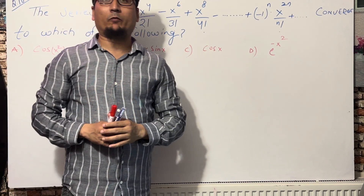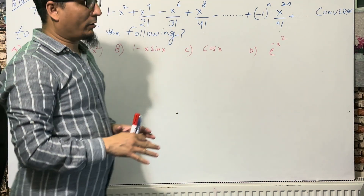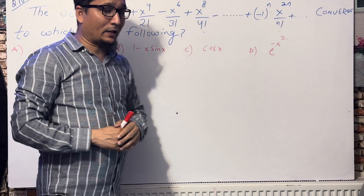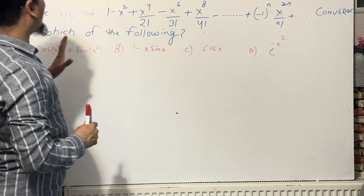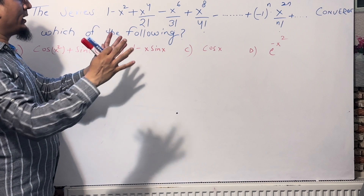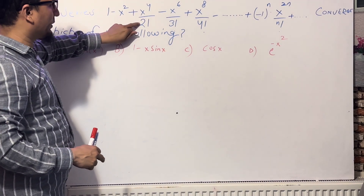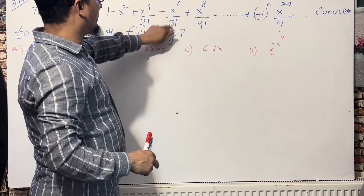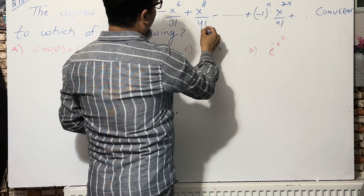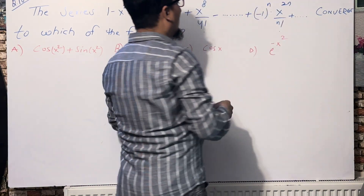Assalamualaikum. In the name of Allah, the most beneficial and most merciful. This is question number 10 of the 2018 AP Calculus past paper. The series is given as: 1 minus x squared plus x to the power 4 divided by 2 factorial, minus x to the power 6 divided by 3 factorial, plus x to the power 8 divided by 4 factorial, and so on.